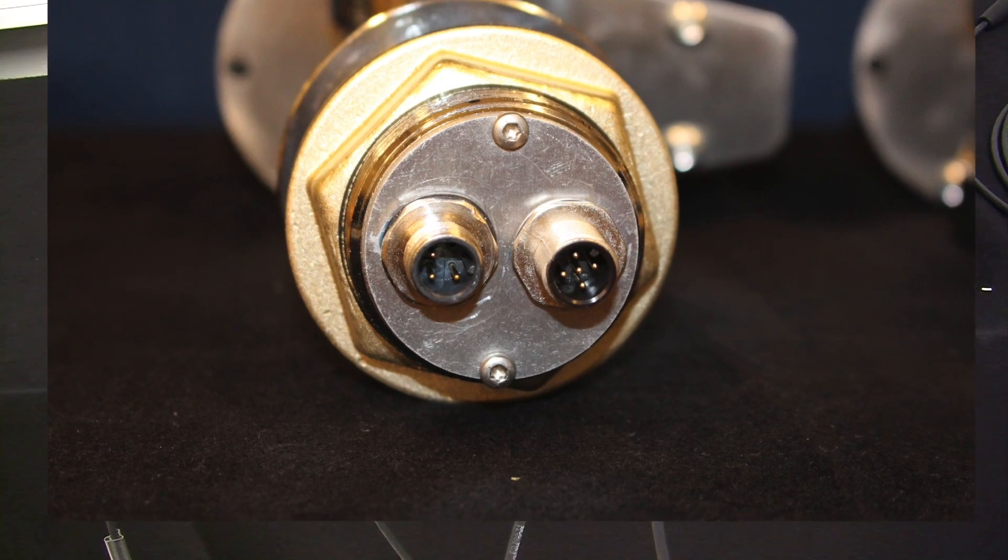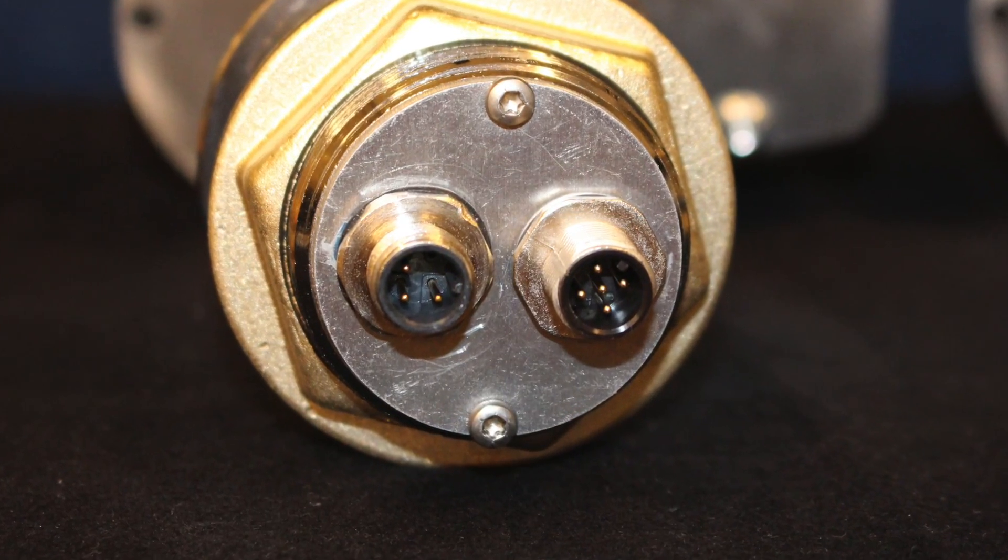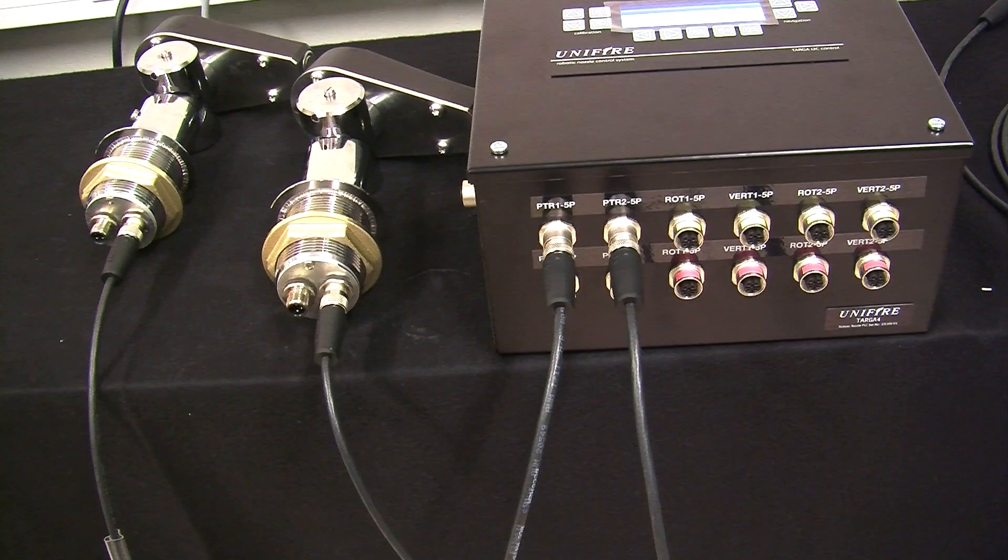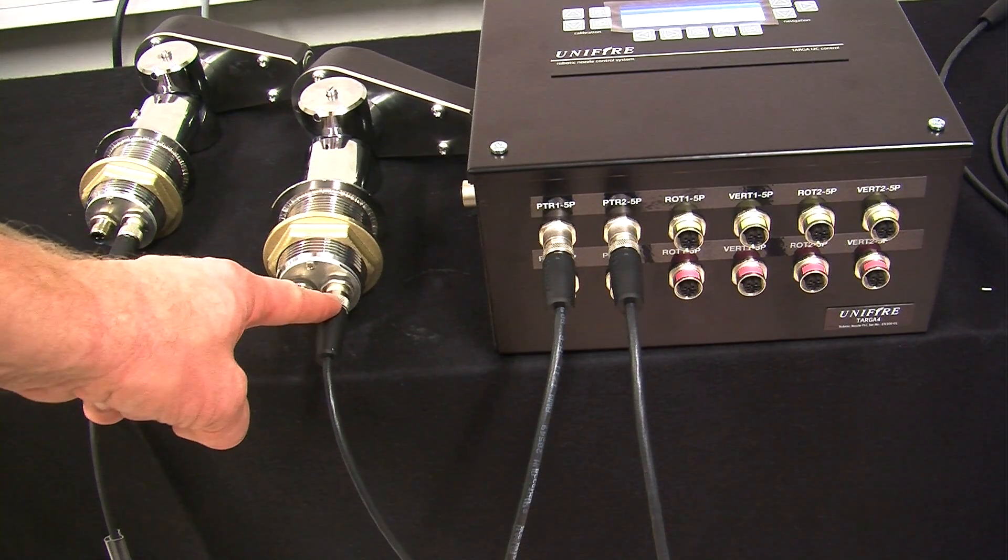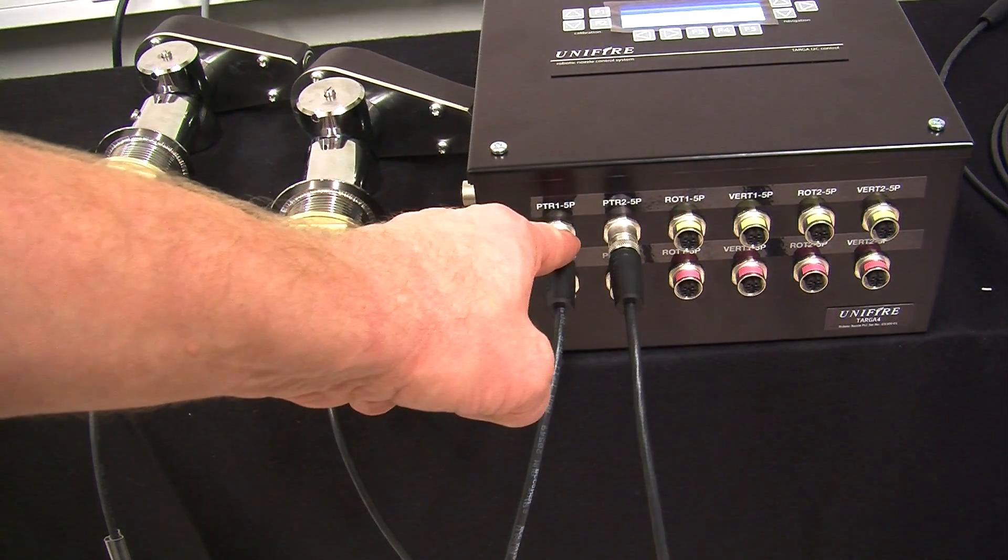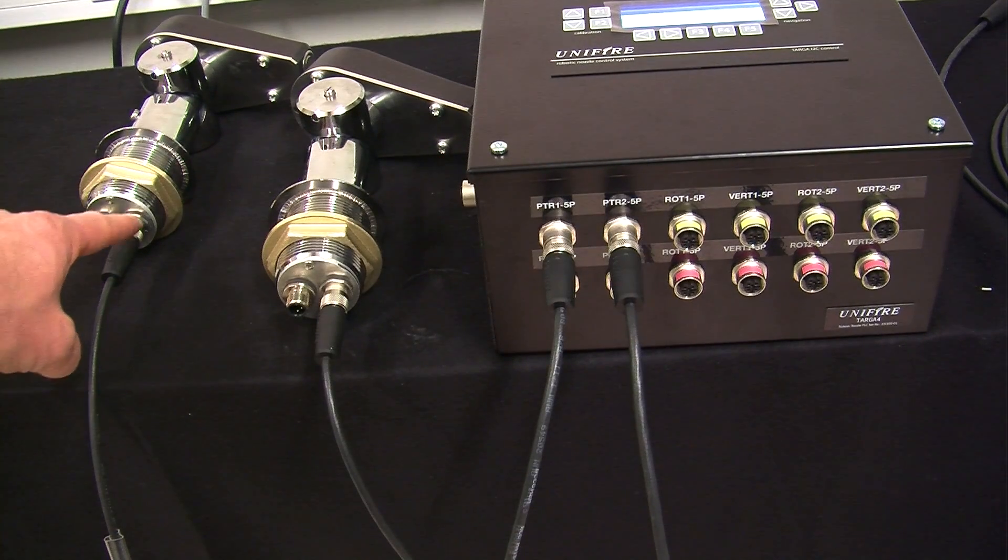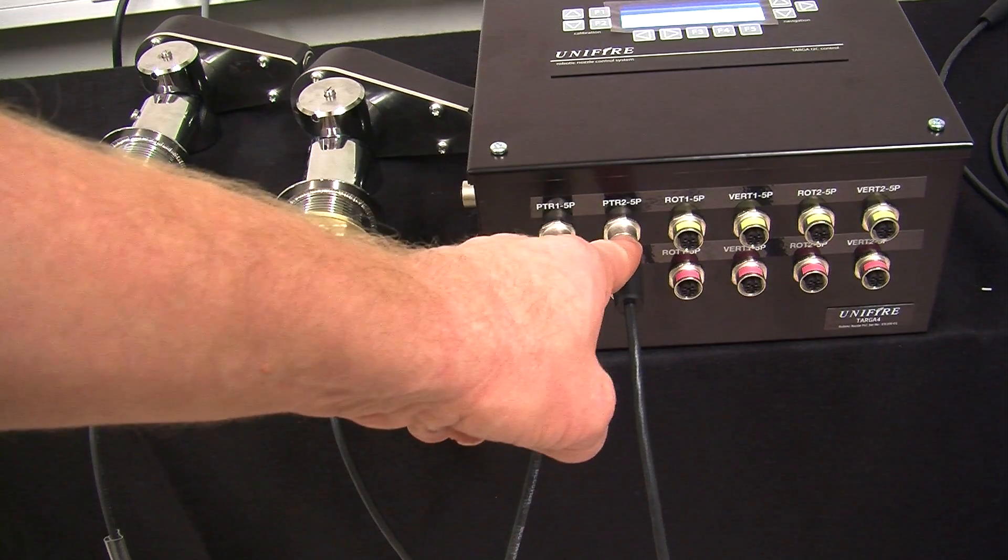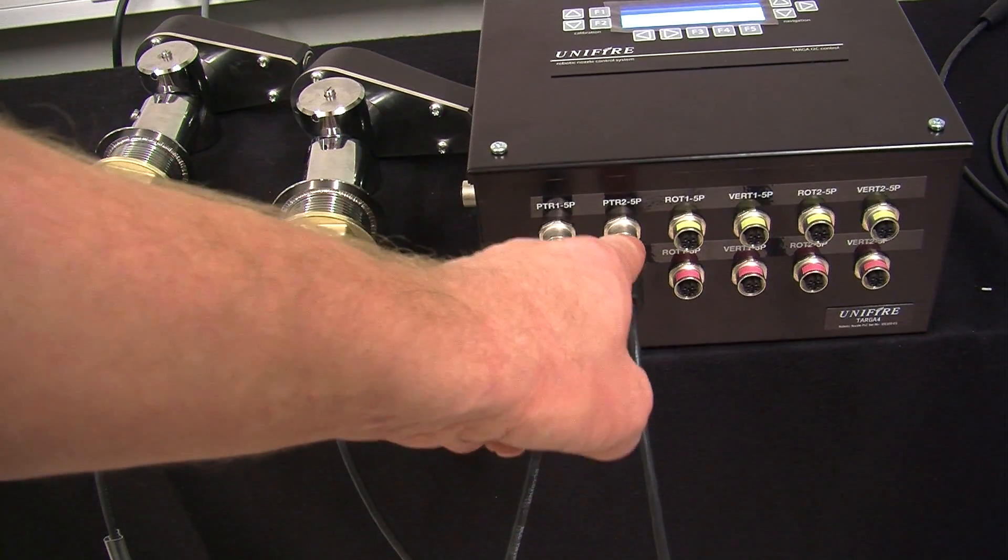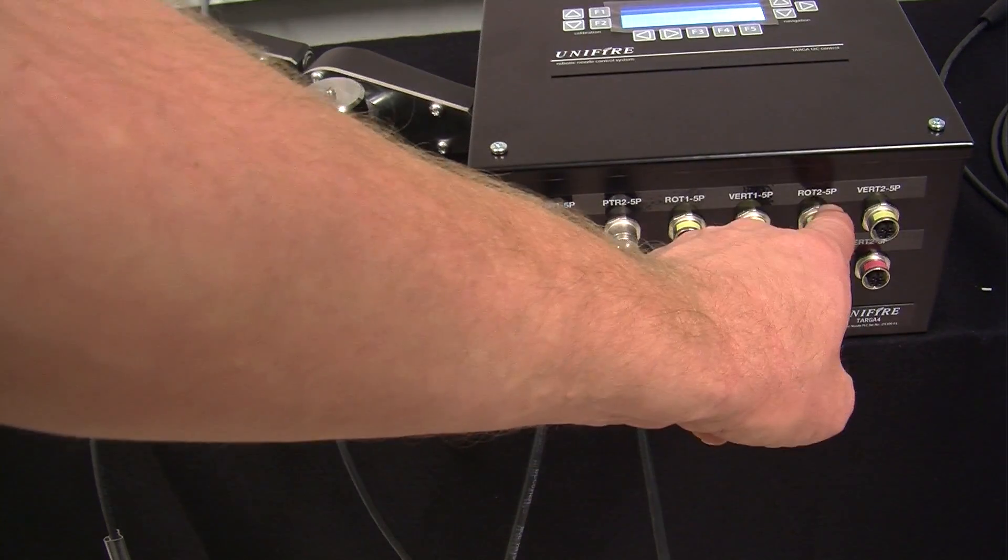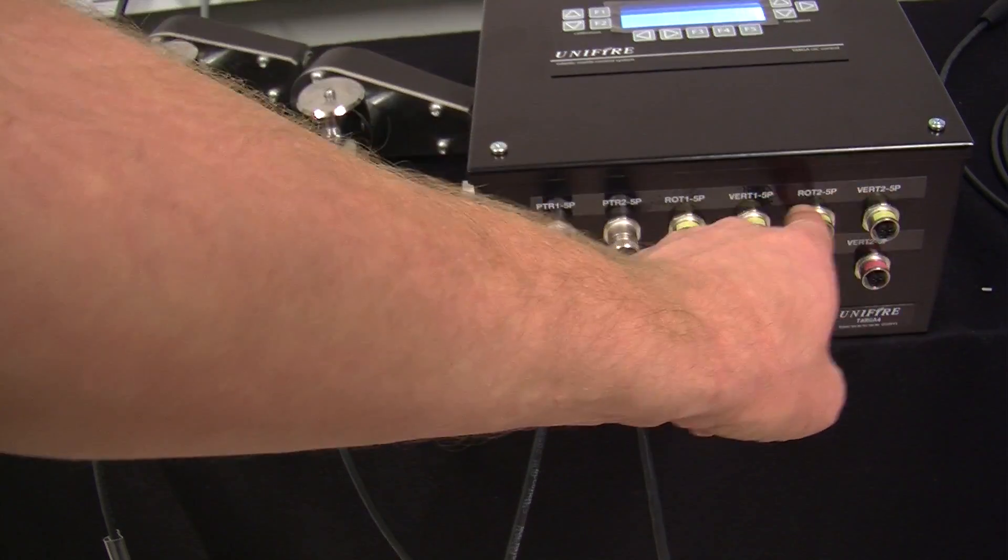The analog outputs, the ones you want to connect to the Targa, is the five-pin connector. In other words, you connect this cable from here to here for pointer one, and you connect this cable from here to here for pointer two. That means pointer two now controls nozzle number two and pointer one controls nozzle number one.